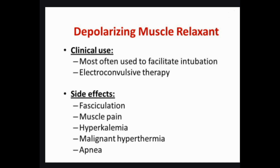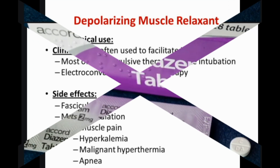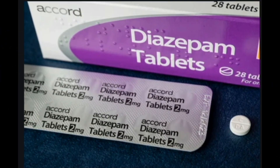While taking a muscle relaxant, avoid activities that require mental alertness or coordination, such as driving or using heavy machinery. You should not take muscle relaxants with alcohol, CNS depressant drugs such as opioids or psychotropics, sleeping medications, or herbal supplements such as St. John's Wort. Talk to your doctor about how you can safely use muscle relaxants if you are older than 65, have a mental health problem or brain disorder, or have liver problems.